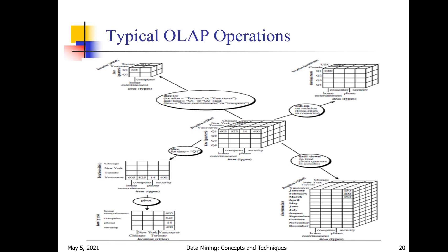Pivot is nothing but rotating the slice result. Above, along the x-axis we have locations and along the y-axis we have items. After the pivot operation, along the x-axis we have items and along the y-axis we have locations. So pivot is just a rotation of the slice operation result.